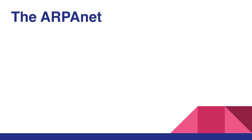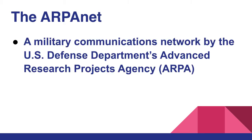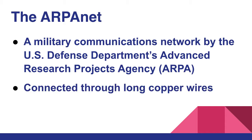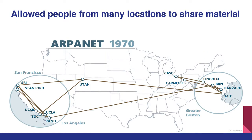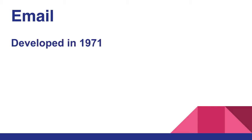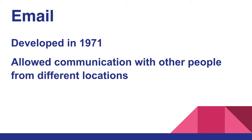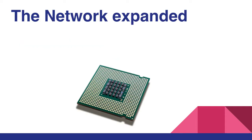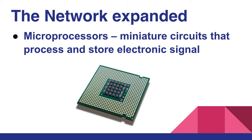The ARPANET is a military communications network designed by the U.S. Defense Department's Advanced Research Projects Agency. Computers were connected through long copper wires, allowing people from many different locations to log in and share research material. The need to send messages quickly led to the development of email in 1971. The network expanded with the emergence of microprocessors, which are miniature circuits that process and store electronic signals.